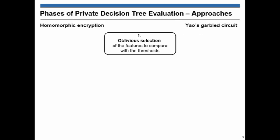Let's start with the phases first. If you look at the end-to-end evaluation of decision trees, we basically identified three phases. The first phase is selection, which you choose the features that should be compared in decision nodes in order. And then, by doing that, you come to the second phase, which is oblivious comparison.